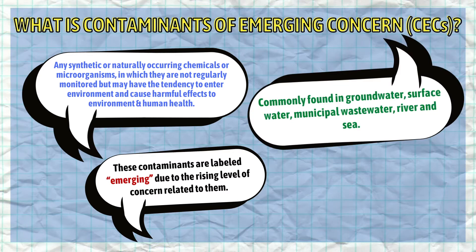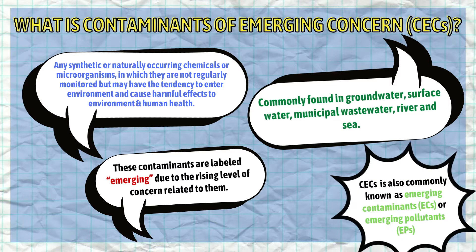They are most commonly found in groundwater, surface water, municipal wastewater, rivers, as well as the sea. On the other hand, CEC is also commonly known as emerging contaminants (EC) or emerging pollutants (EP).